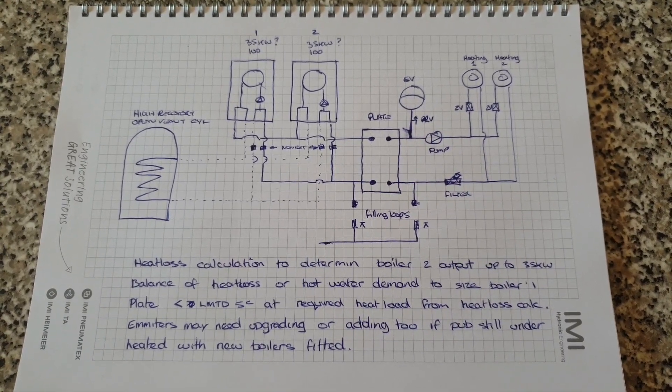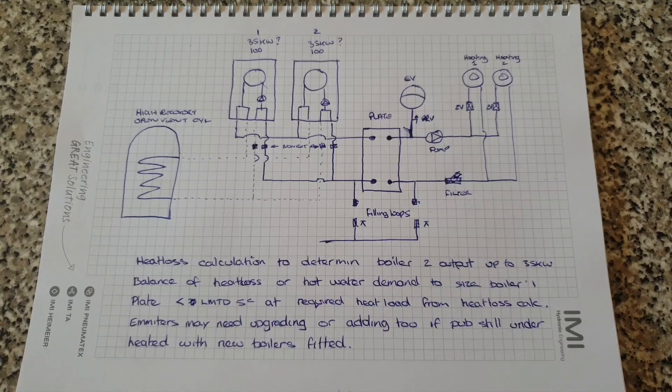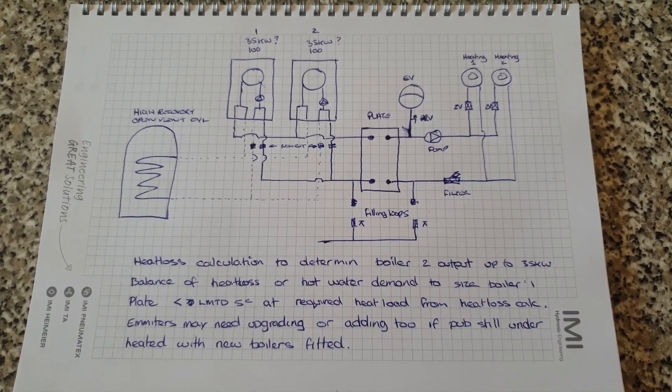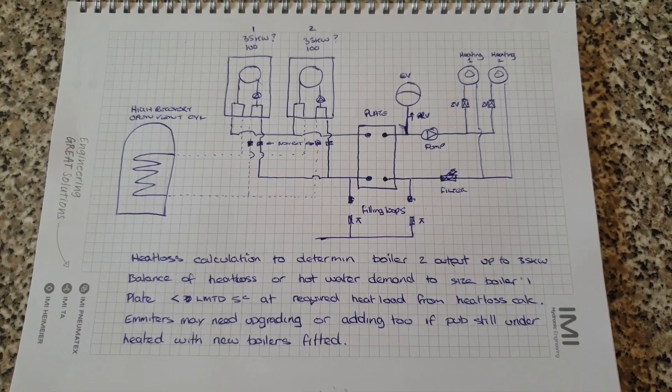Currently there's two boilers installed which we suspect are around 30 kilowatts each and it's failing to heat the pub which could, as I say, be a problem with emitters.